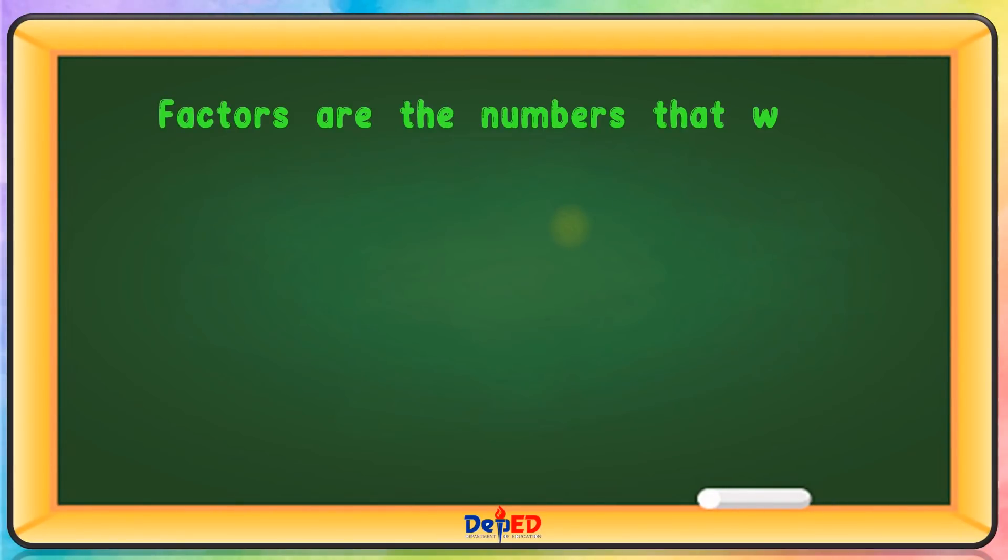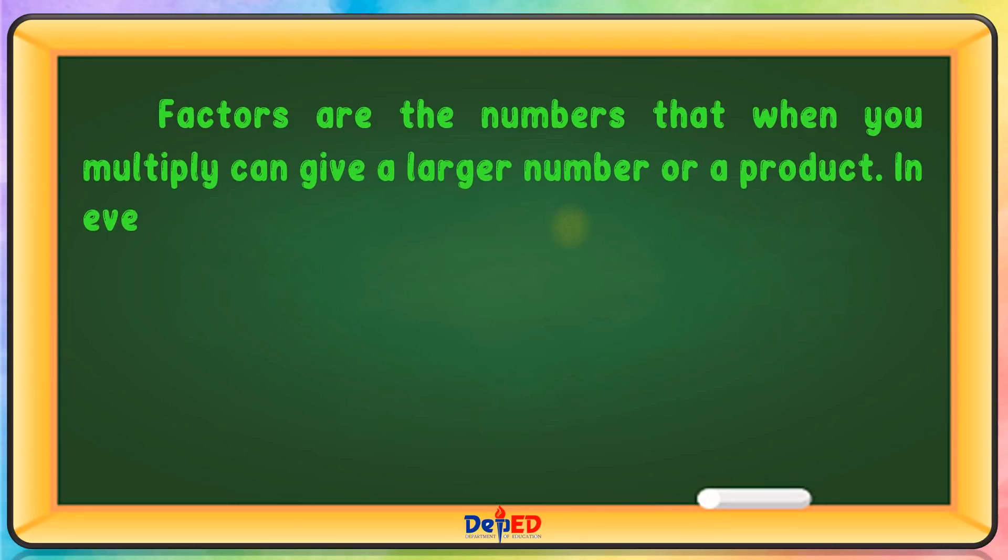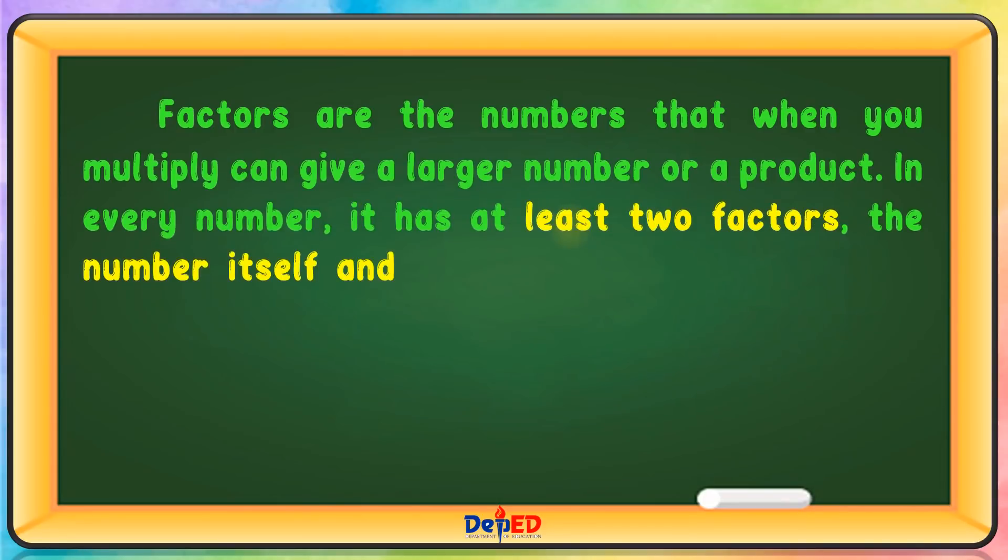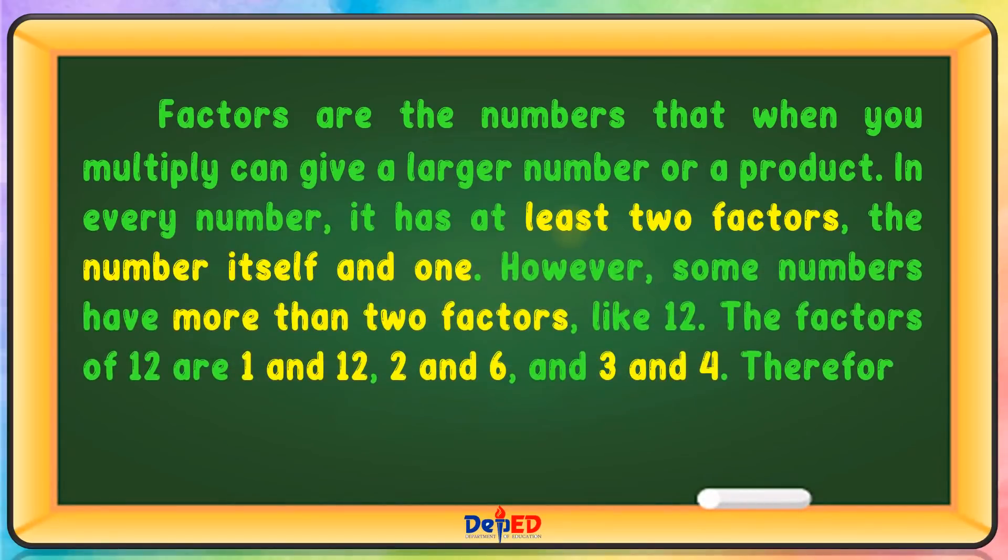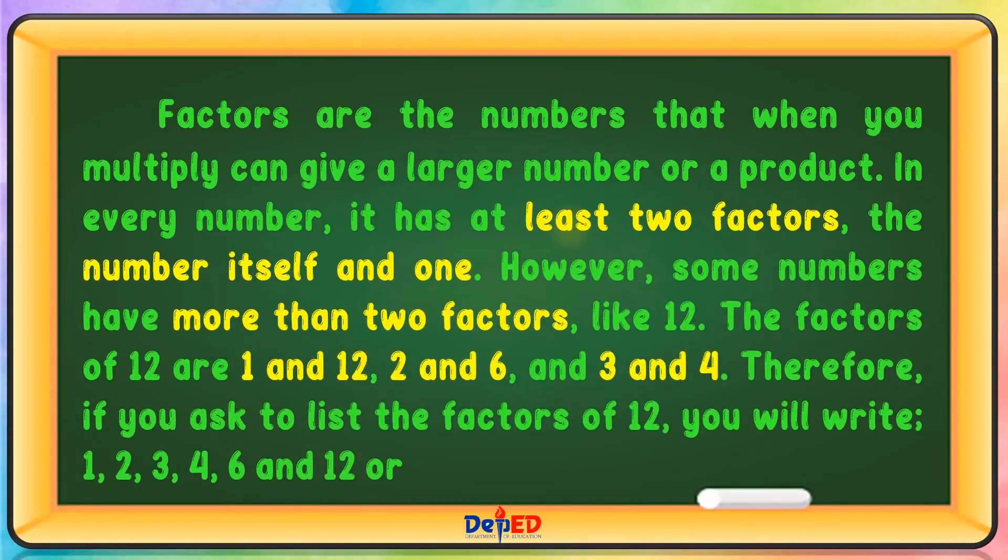Factors are the numbers that when you multiply can give a larger number or a product. In every number, it has at least 2 factors: the number itself and 1. However, some numbers have more than 2 factors, like 12. The factors of 12 are 1, 12, 2, 6, 3, and 4. Therefore, if you list the factors of 12, you will write 1, 2, 3, 4, 6, and 12.